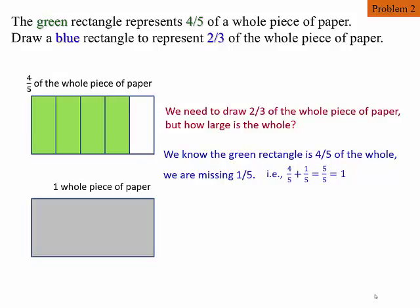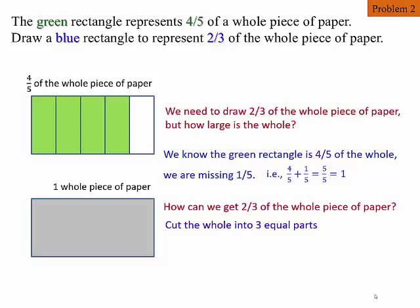Essentially, four-fifths plus one-fifth equals five-fifths, and that's one whole. Now, how can we get two-thirds of the whole piece of paper? By cutting the whole into three equal parts and shading two of the three parts. Now we have two-thirds.